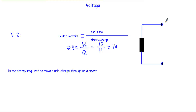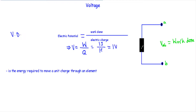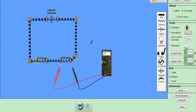So voltage or potential difference indicates the energy required to move a unit charge through an element. For an element with terminals A and B, VAB indicates the amount of work required to move a unit charge from point A to point B through that element. In other words, the word voltage is synonymous with the work done to move an electron or a unit charge through an element. The higher the voltage, the more work you have to do to move an electron through that element.